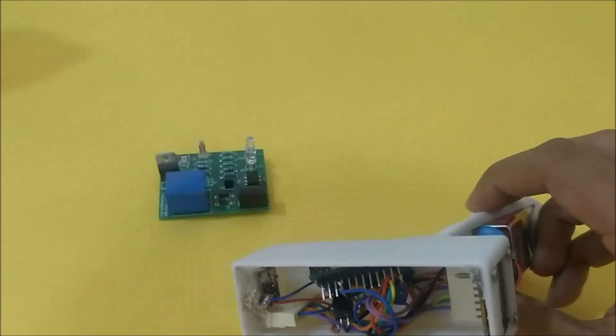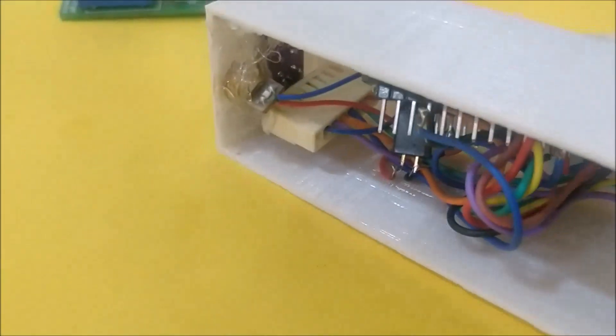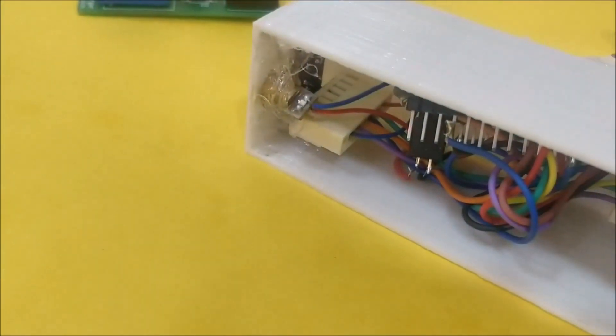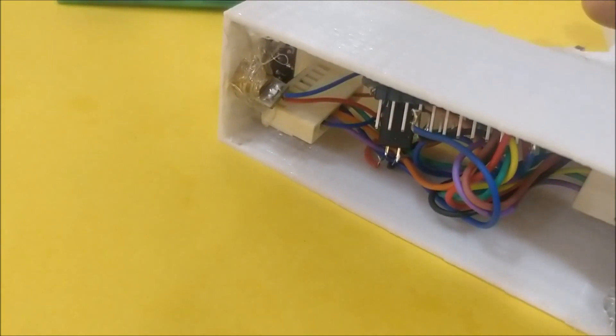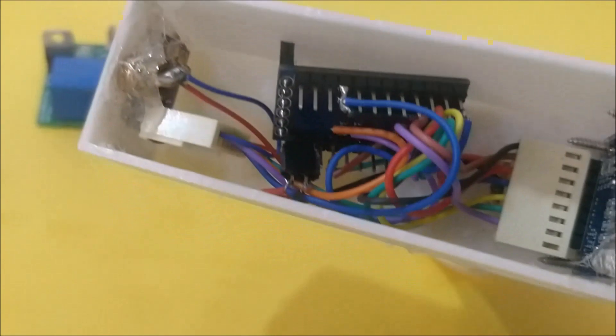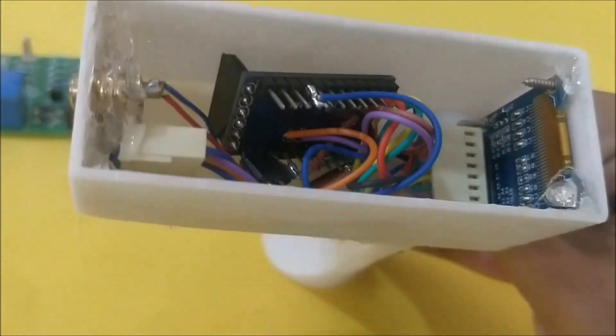We have the sensor over here and a laser diode on top of it to point at the object whose temperature we are measuring. It is connected to an Arduino Pro Mini and then to an OLED display.